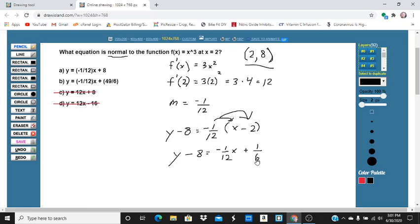So now we're going to add 8 to both sides to get y by itself. I'm going to add it as something over 6, so we multiply 8 times 6/6, we get 48/6. So we get y equals negative 1/12 x plus 49/6.